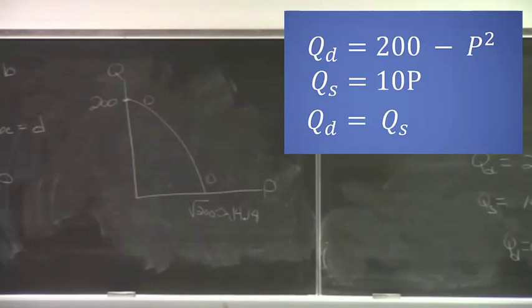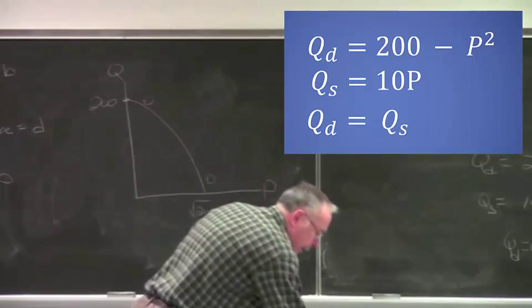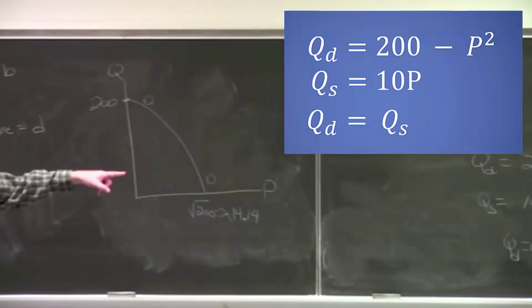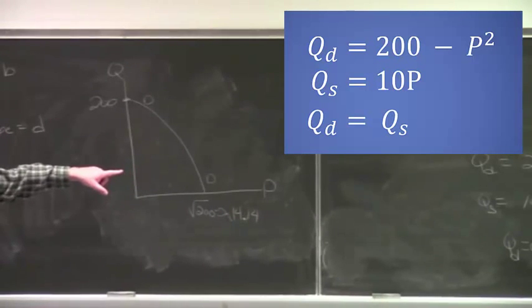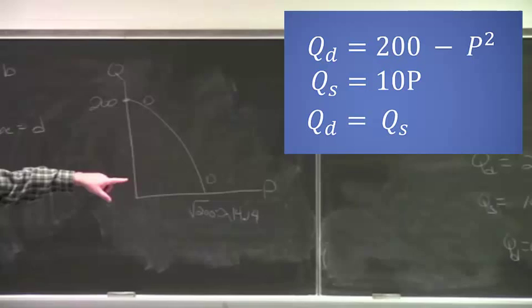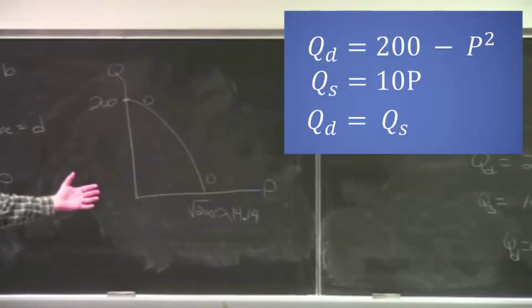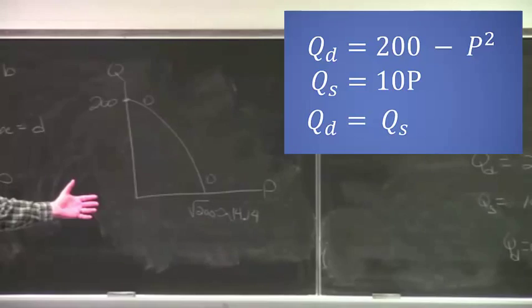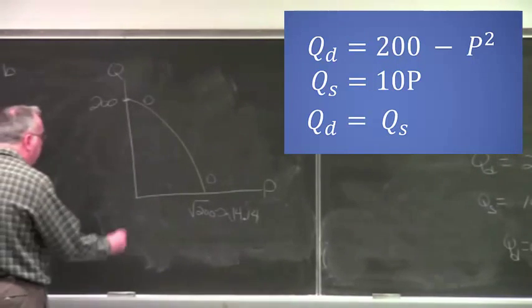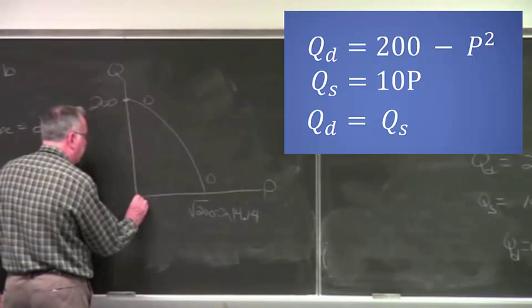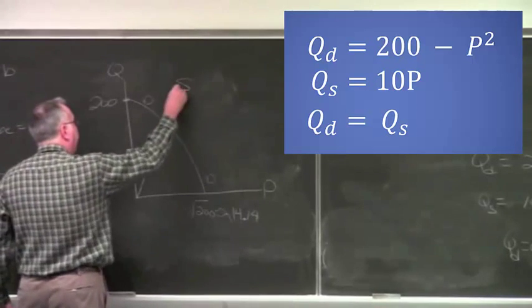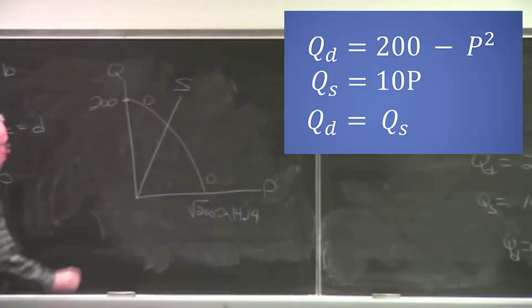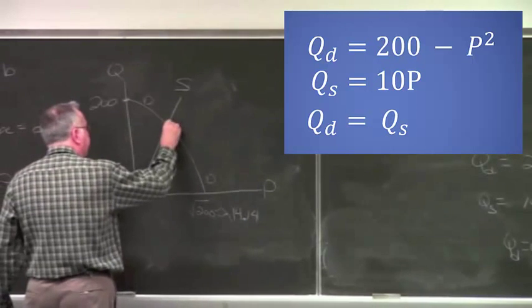So it's a downward sloping demand curve. We're reflecting the law of demand. The higher the price, the less quantity demanded. So it makes sense. The supply curve, if I graph that, what does the supply curve look like? Qs is just 10P, so the supply curve will be what? Linear. Linear. With a slope of 10. A slope of 10. So actually, if we graph it, we'll put something like this.